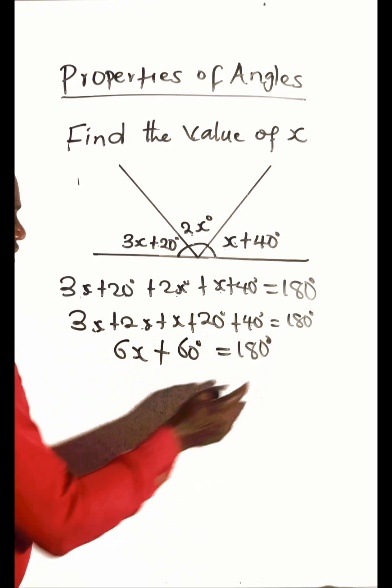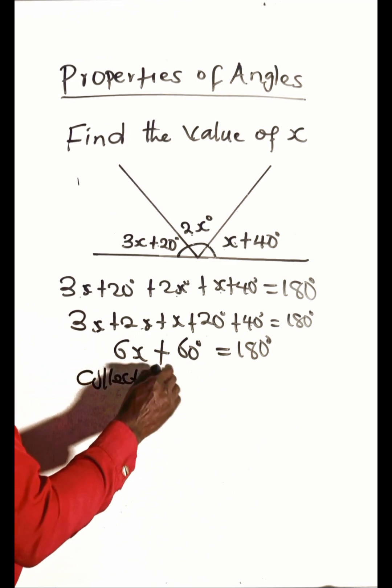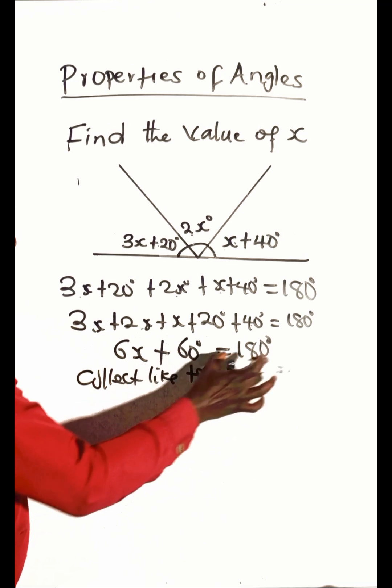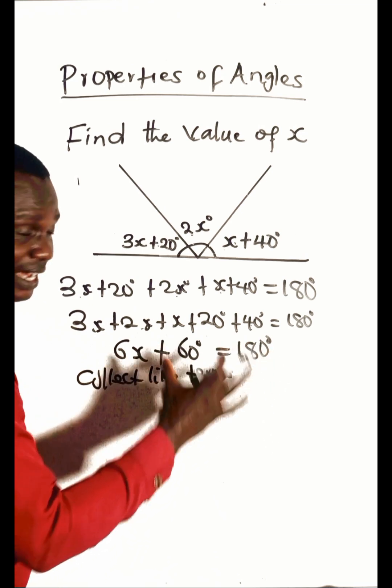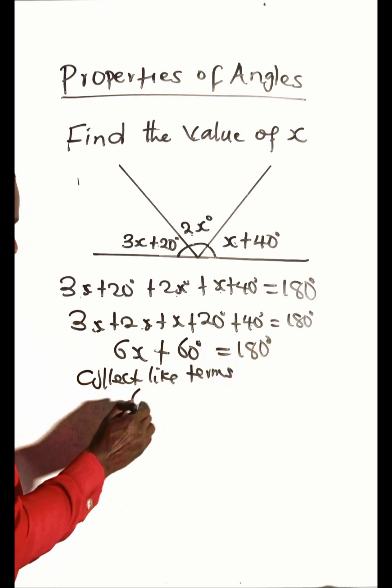The next step is to collect like terms. Now, this 60 and 180 are constants, so take the 60 to the other side, leaving 6x on this side. Then this side will be 180 degrees minus 60 degrees.